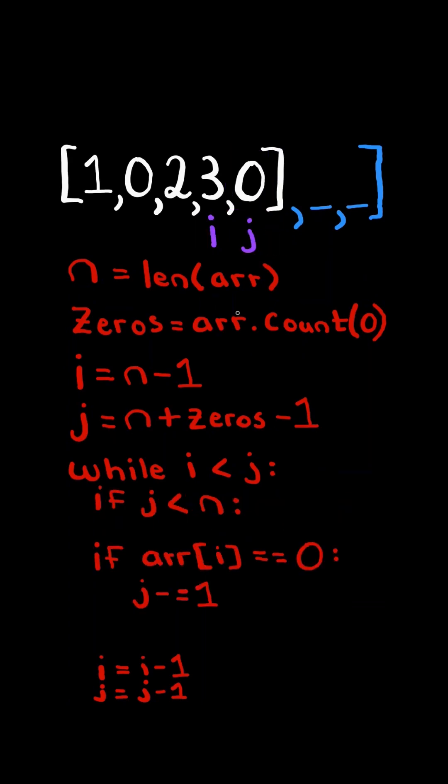Now, if index j is less than n, we set array at j equaling the value at array at i. And lastly, we decrement i and j by 1.